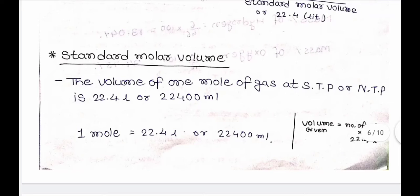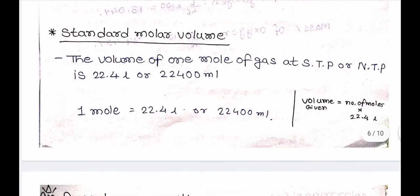The next topic is Standard Molar Volume. The volume of 1 mole of gas at STP or NTP is 22.4 litres or 22,400 mL. 1 mole = 22.4 litres or 22,400 mL. There is a trick to find the volume given in the question: if number of moles is given, we can find the volume. Formula: Volume = number of moles × 22.4 litres.